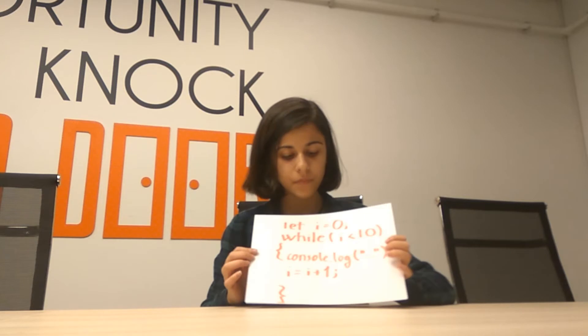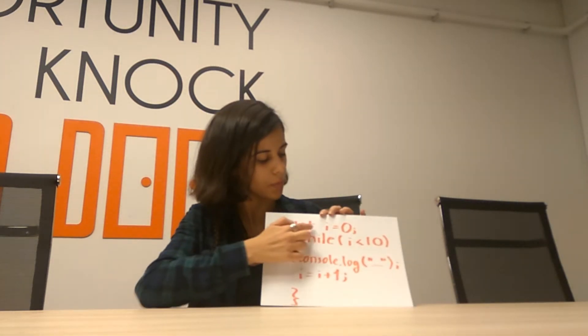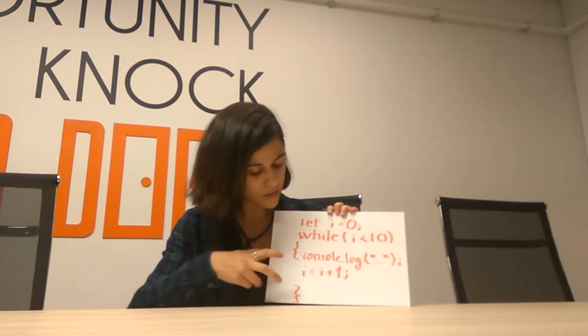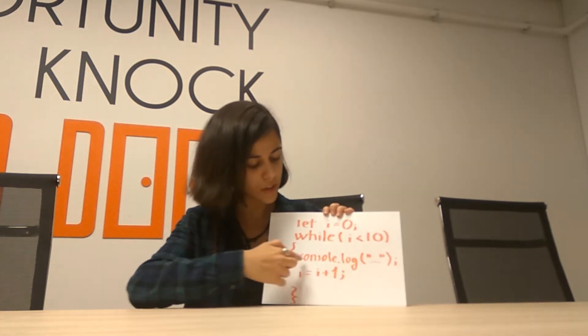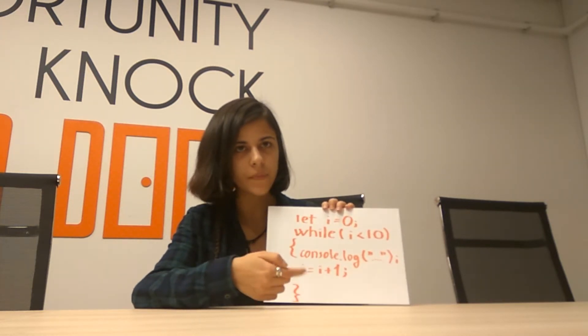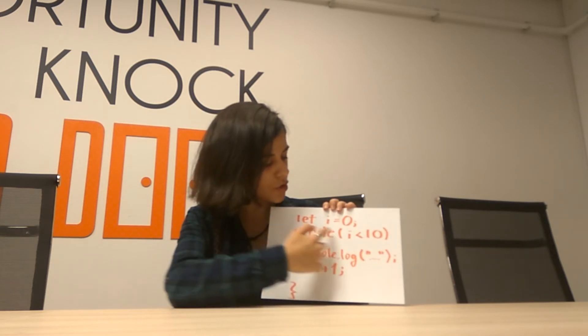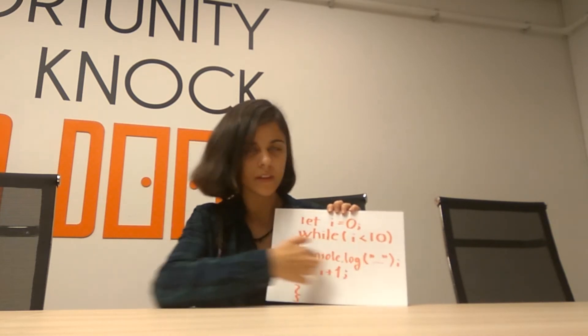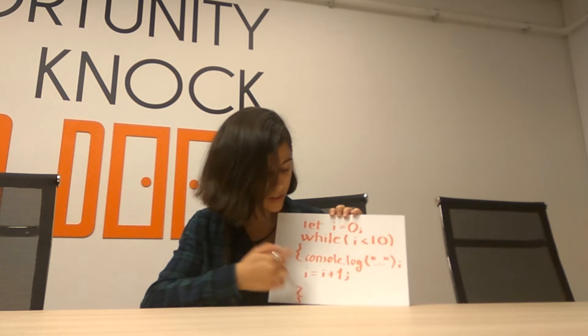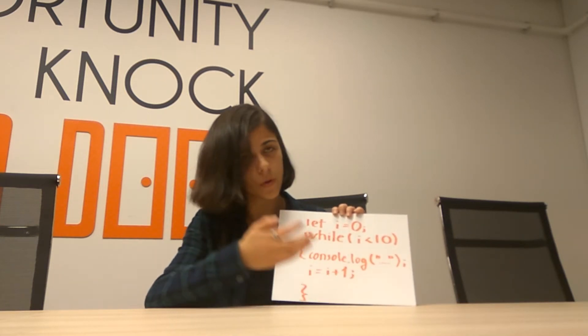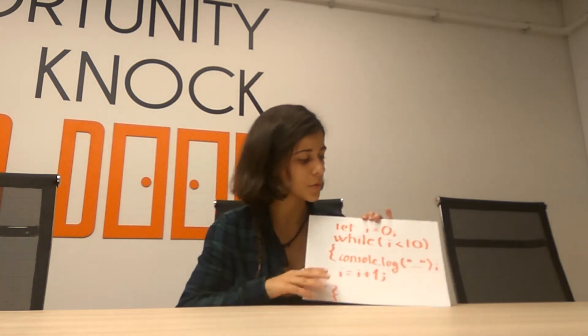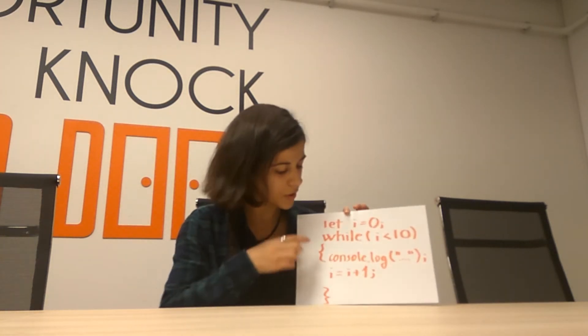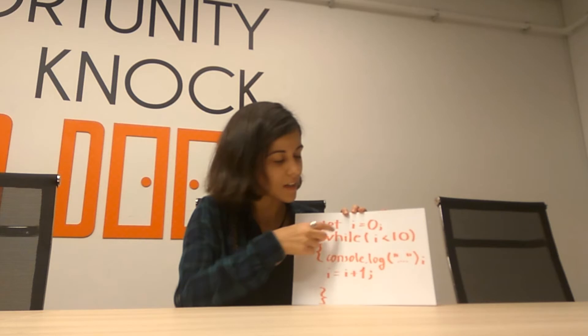The syntax is simple. You create a variable i and check a condition — for example, while i is less than 10, you do something, like a console log or anything else. Then you increment i by one using i++ each time.